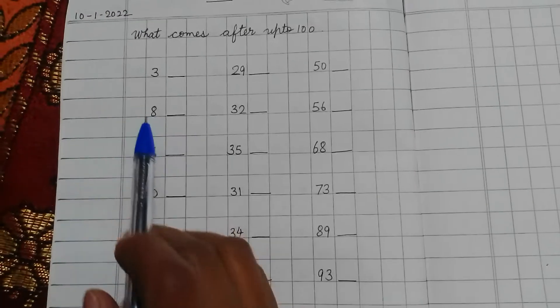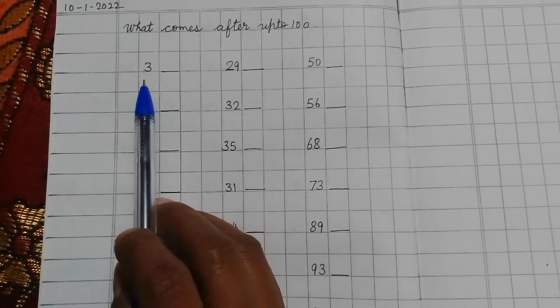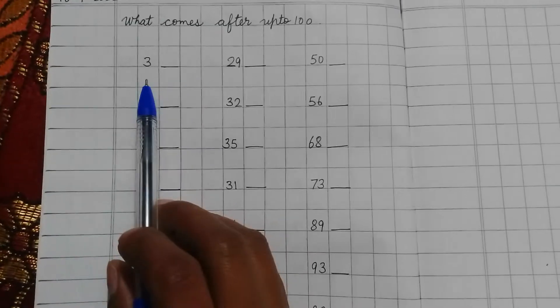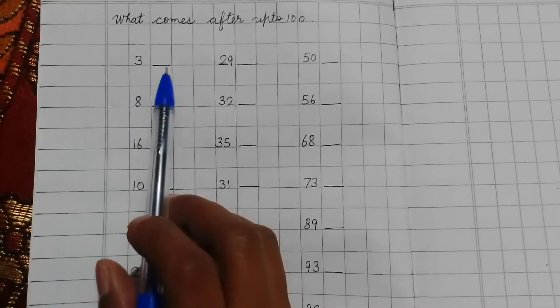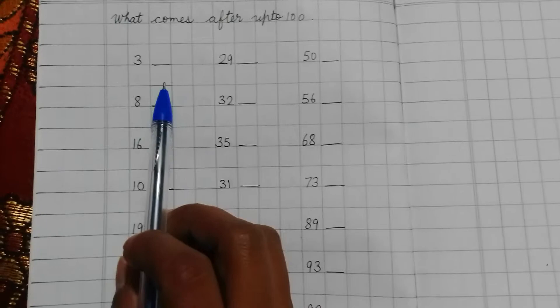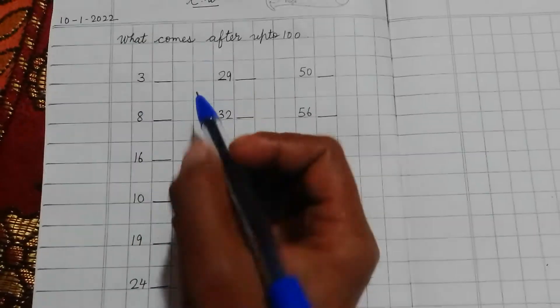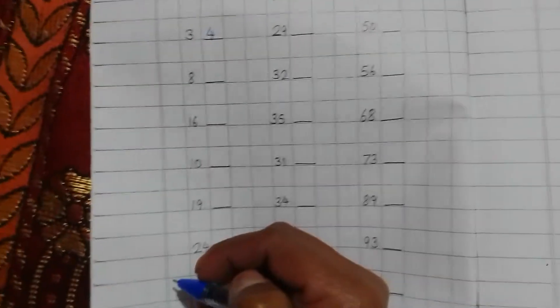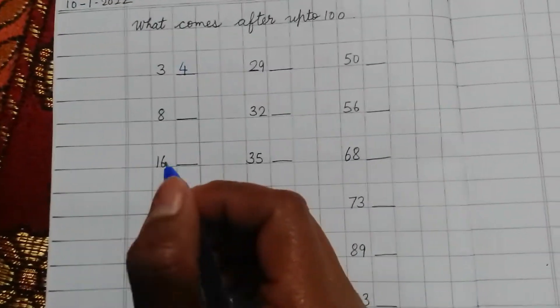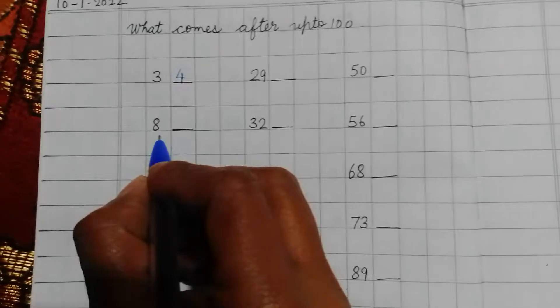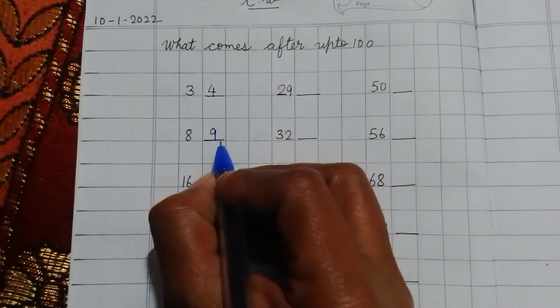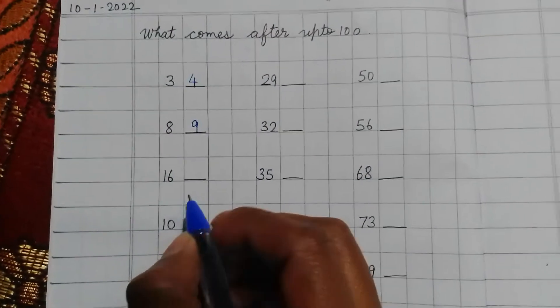Okay so given number we have to see, given number we have to write the number which comes after. We have said 3. Then 3 we have to write 4. So after 3, 4 will come. Next number is 8. So after 8 which number we speak? 9. 8, 9. So we can say 9 comes after 8.